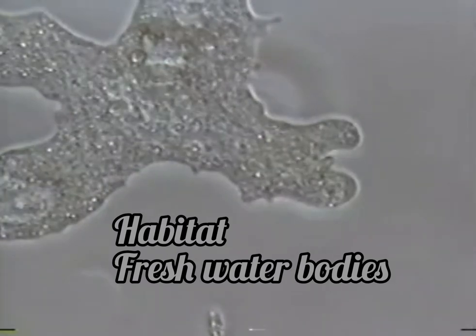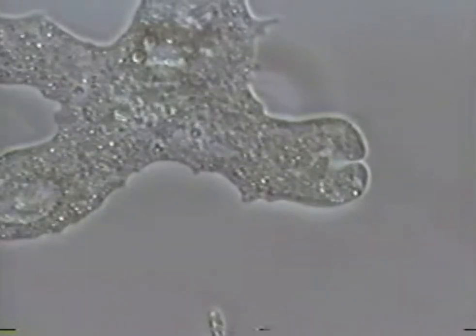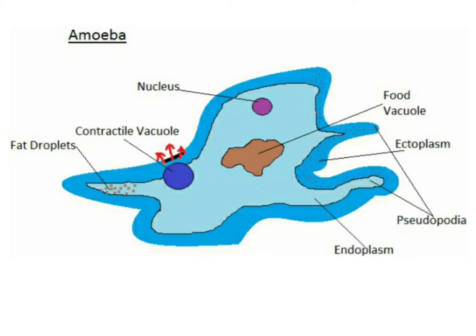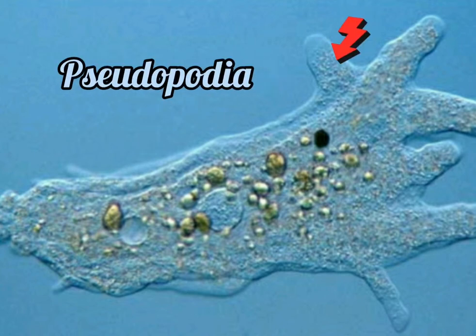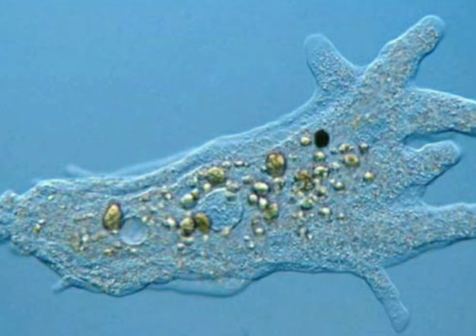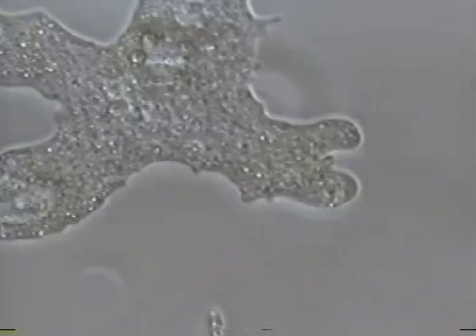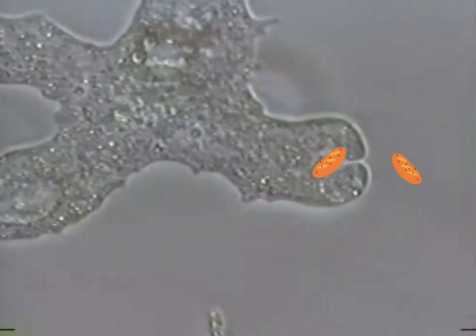Amoeba is found in freshwater bodies. The protoplasm is differentiated into ectoplasm, that is the outer membrane, and the endoplasm, that is the inner part. The endoplasm contains food vacuole and a round prominent nucleus in the center. The body is covered by a soft and selectively permeable membrane called plasma membrane. It can constantly change its shape by putting forth and withdrawing small finger-like outgrowths called pseudopodia, which are the locomotory structures and help in capturing food. Amoeba shows holozoic mode of nutrition, feeding on aquatic organisms like bacteria, diatoms, algae etc.